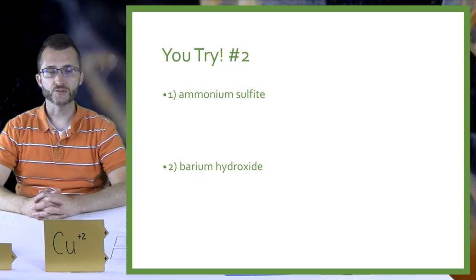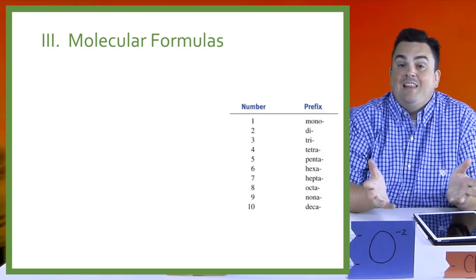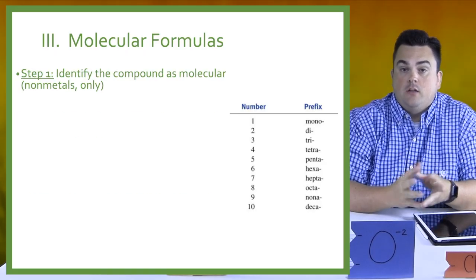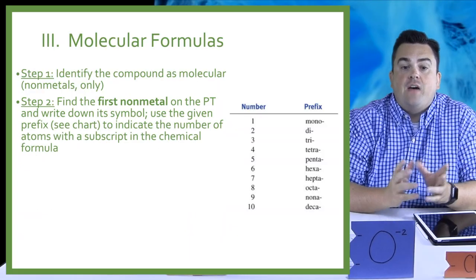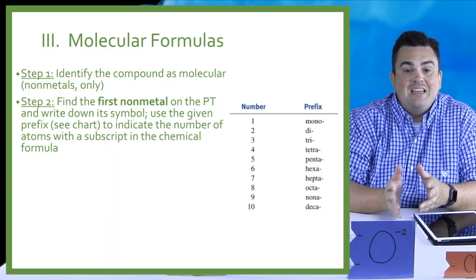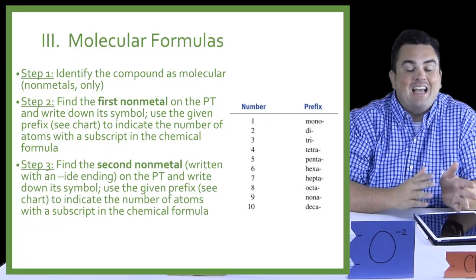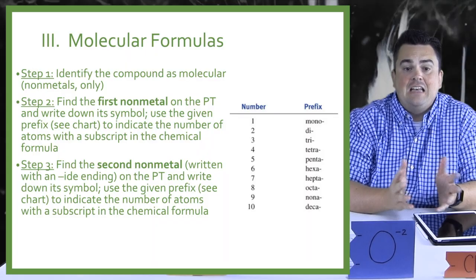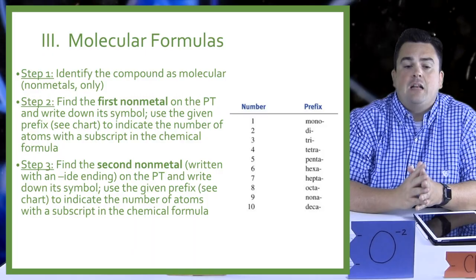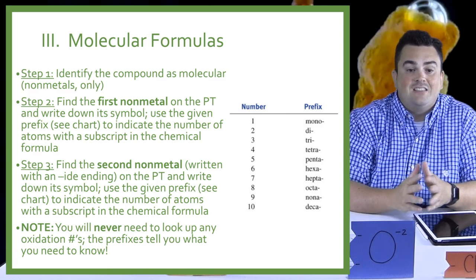You try number two — please write the chemical formulas for the following names. Make sure you're using your periodic tables and Table E. Molecular formulas: molecular means covalently bonded. Step one: identify the compound as molecular — it contains non-metals only. Step two: find the first non-metal on the periodic table, write its symbol, and use the given prefix to indicate the number of atoms with a subscript. Step three: find the second non-metal with an -ide or -id ending, write its symbol, and use the given prefix for the subscript. Note: you will never need to look up any oxidation numbers — the prefixes tell you what you need to know.